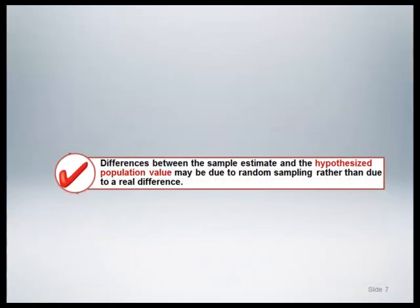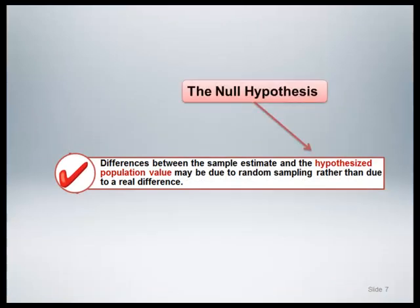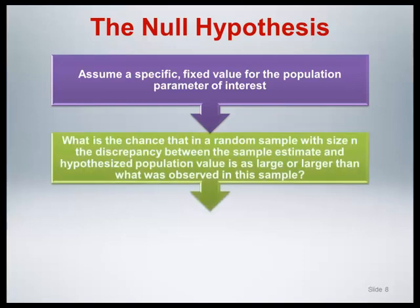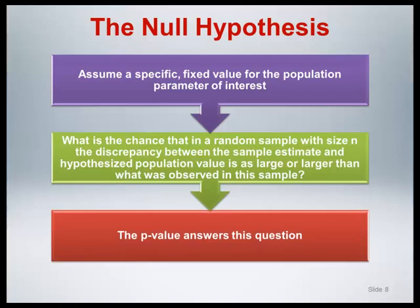Critical to the understanding and calculation of the p-value is the notion of the hypothesized population value, formally known as the null hypothesis. Specification of the null hypothesis involves assuming a specific fixed value for the population parameter of interest. Then, under the assumption of the null hypothesis, a probability is calculated that answers the following question: what is the chance that in a random sample of size n, the discrepancy between the sample estimate and the hypothesized population value is as large as or larger than what was observed in this sample? The p-value is the answer to this question.